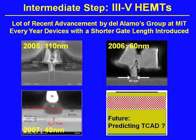At MIT, people have begun to build indium arsenide based HEMT devices. They've published that in subsequent IEDM papers in 2005 with a 110 nanometer device, a 60 nanometer, and a 40 nanometer device, which look reasonably promising in their overall device behavior. It seems like they were able to shorten the gate length every year.